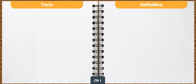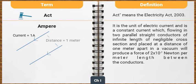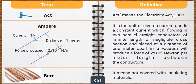Before we get on with the safety requirements, let's look at some important definitions relevant to our field of work. Act means the Electricity Act 2003. Ampere is the unit of electric current — a constant current which, flowing in two parallel conductors of infinite length of negligible cross-section placed at a distance of 1 meter apart in a vacuum, will produce a force of 2 × 10⁻⁷ newton per meter length between the conductors. Bare means not covered with insulating materials.